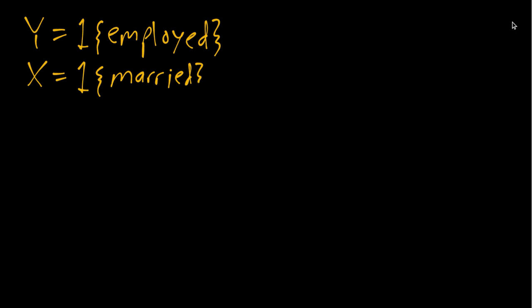To keep it simple, we'll just have two binary variables. First, we'll have Y, which is defined using the indicator function for whether an individual is employed. So this notation means Y equals one if the individual is employed and Y equals zero if not. Then X will also be defined using an indicator function for whether that same individual is married. So X equals one if they are, X equals zero if not.